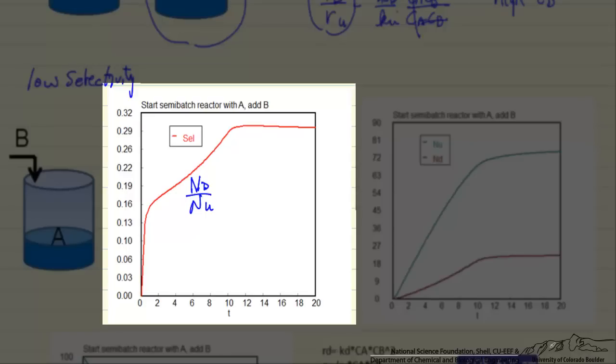Because when we empty out the reactor that's the important number. And you can see the selectivity is only about 0.3 when we finish the reactor.